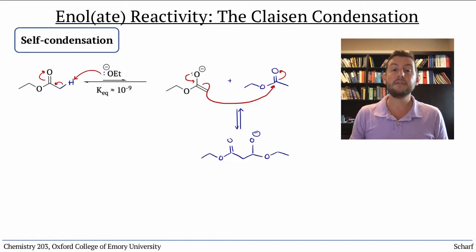This creates a tetrahedral intermediate, which likes to collapse by a lone pair push. And since the electrophile was an ester, there's a viable leaving group built in. This produces a beta-dicarbonyl compound.